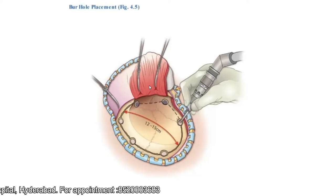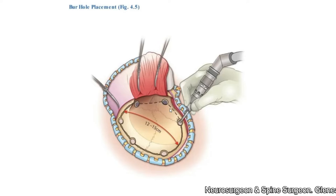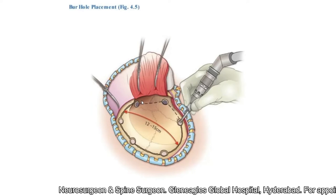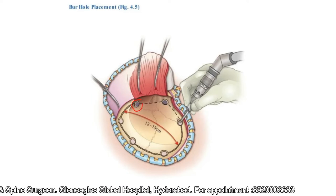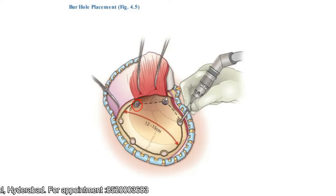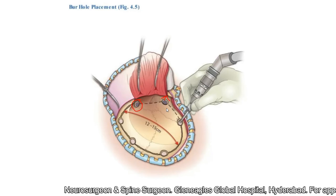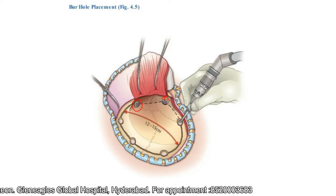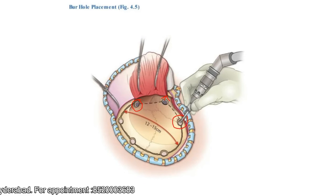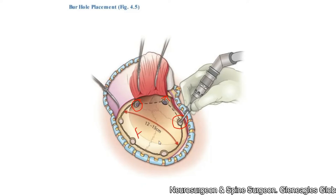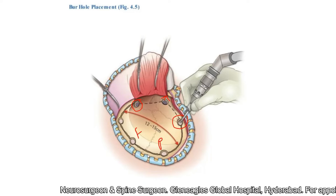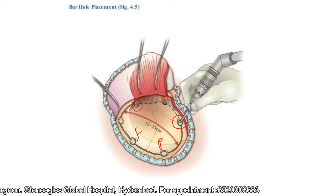For burr hole placement, we use a high-speed drill so that the chances of penetrating the dura mater are less. The first burr hole is the classical key burr hole. The second burr hole is placed at the root of the zygoma, as low down as possible on the squamous temporal bone — the more towards the base of skull you go, the easier it is to expose the middle cranial fossa. The third burr hole is above the mastoid — do not open the mastoid air cells. The remaining burr holes are placed along the frontoparietal region near the midline.